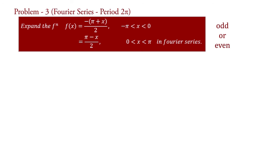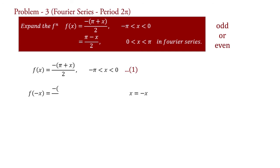If you cannot determine by observation, then apply this process. The first part of the function is f(x) equal to minus(pi + x)/2 for minus pi less than x less than 0 — say equation 1. Take x equal to minus x. Therefore, f(minus x) equal to minus(pi minus x)/2 for minus pi less than minus x less than 0.